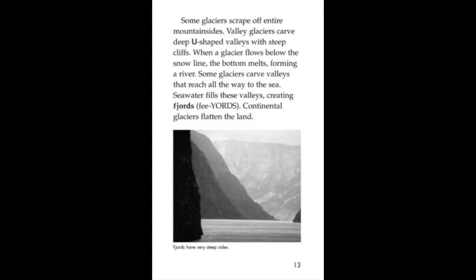Some glaciers scrape off entire mountain sides. Valley glaciers carve deep U-shaped valleys with steep cliffs. When a glacier flows below the snow line, the bottom melts, forming a river. Some glaciers carve valleys that reach all the way to the sea. Sea water fills these valleys, creating fjords. Continental glaciers flatten the land.